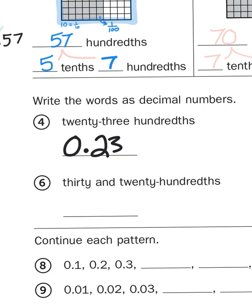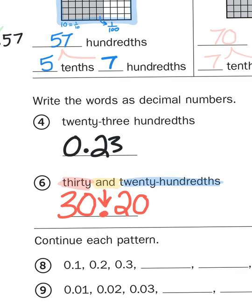If you skip down to number 6, you're going to see the word AND, and that is a very important word. '30 AND 20 hundredths' is an expression that talks about whole numbers and parts — wholes and fractions. The 30 you write just like a normal 30, and that AND gets translated into a decimal point. So 30 AND 20 hundredths would look like 30.20, where the 30 represents whole numbers and the .20 represents 20 hundredths, or parts of one.